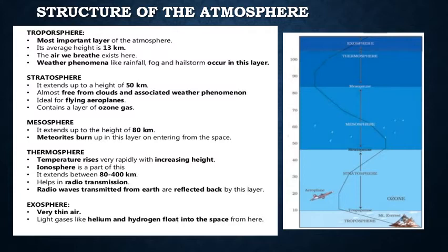The next layer is the thermosphere, where temperature rises very rapidly with increasing height. The ionosphere is a part of this layer. It extends between 80 to 400 km and helps in radio transmission.